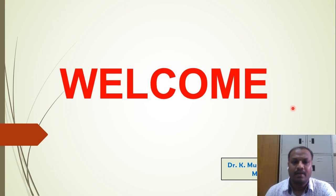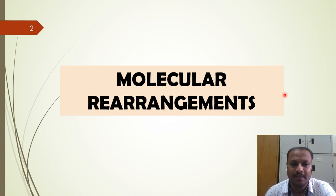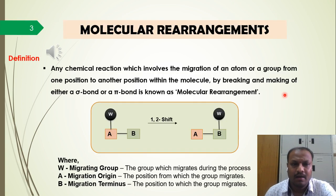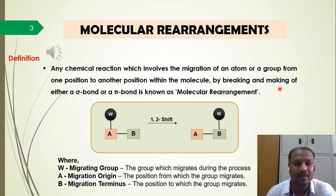Hello everyone, welcome. In this video we will be learning an important organic topic called molecular rearrangements. Any chemical reaction which involves the migration of an atom or a group from one position to another position within the molecule, by breaking and making of either a sigma bond or a pi bond, is known as molecular rearrangement.